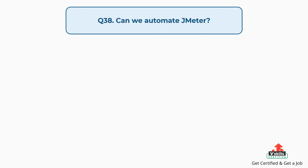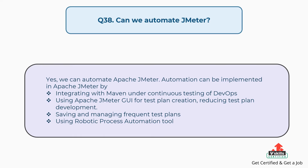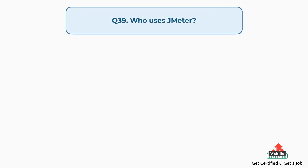Question 38: Can we automate JMeter? Yes, we can automate Apache JMeter. Automation can be implemented by integrating with Maven under continuous testing in DevOps, using the Apache JMeter GUI for test plan creation, and using Robotic Process Automation tools to save and manage frequent test plans.